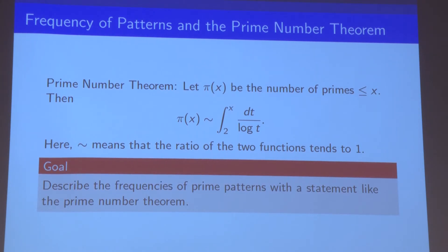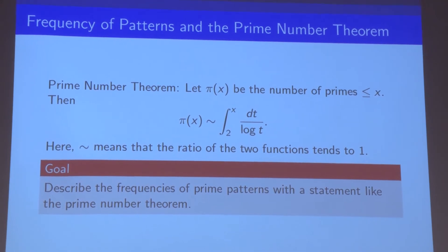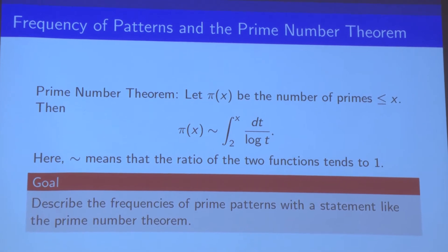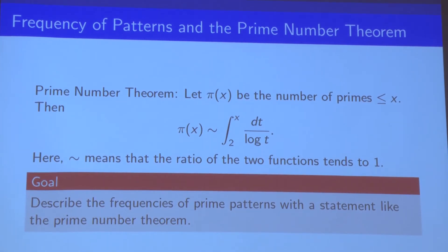We're going to do that by appealing to statements like the prime number theorem we'll introduce right now. As many of you probably know, Euclid's proof of the infinitude of primes only tells us that there are infinitely many primes, but it doesn't tell us much about how those primes are actually distributed.